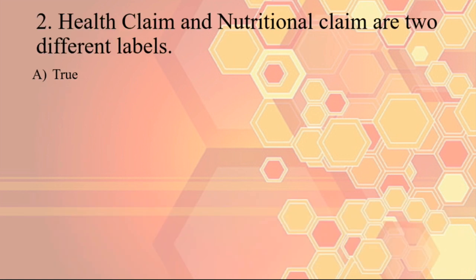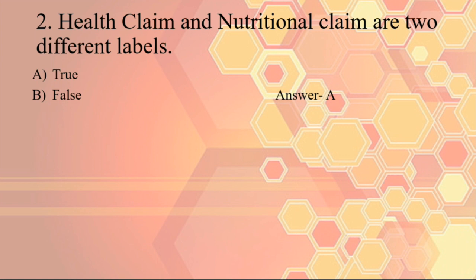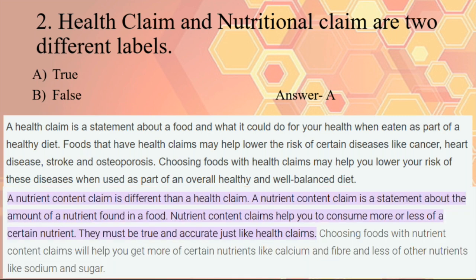Next question: health claims and nutritional claims are two different labels — true. Health claims suggest a relationship between the food and health, for example that a food helps in certain disorders, like cooking oil advertisements that say it helps lower cholesterol. Nutrient claims state that a food has particular nutritional properties, such as being a rich source of calcium, vitamin A, or some other nutrient.